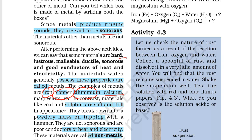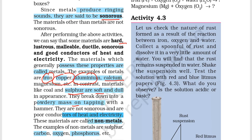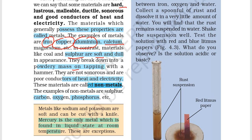In contrast, some materials like coal and sulfur have a very soft and dull appearance. When you break them, they break down into a powdery mass. When struck, they do not produce a sonorous sound, and their properties include being poor conductors of heat and electricity. These materials are called non-metals — such as sulfur, carbon, oxygen, and phosphorus.